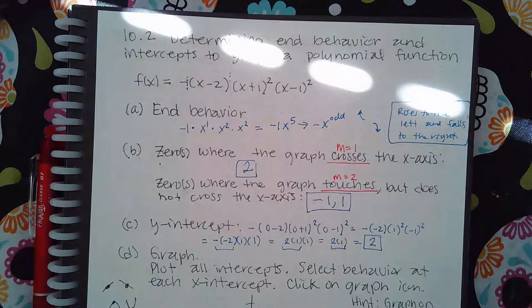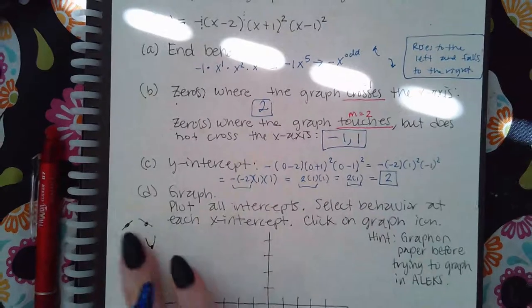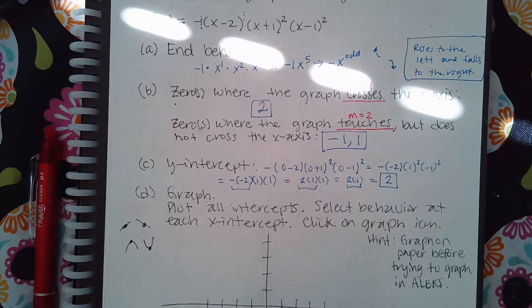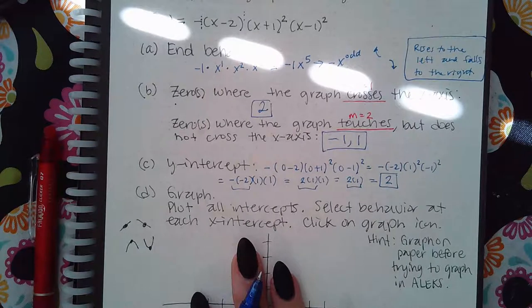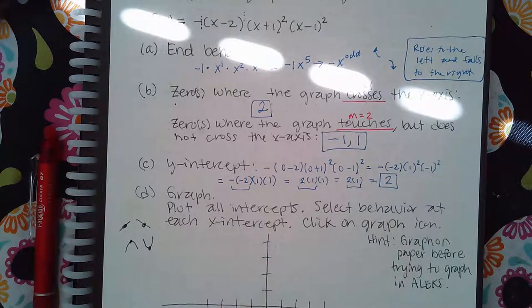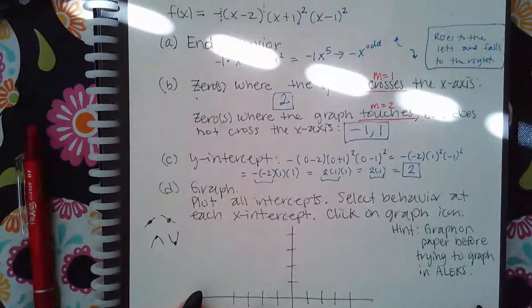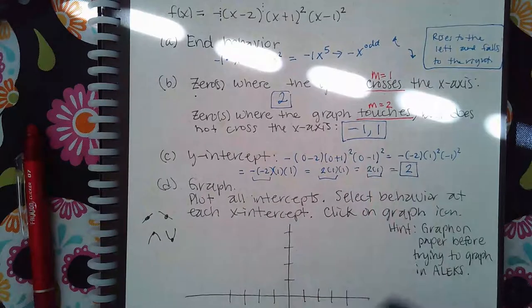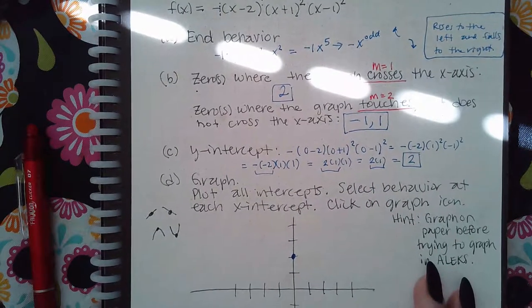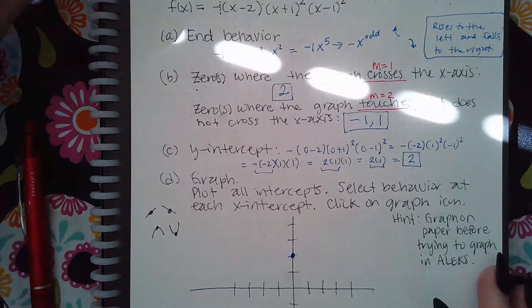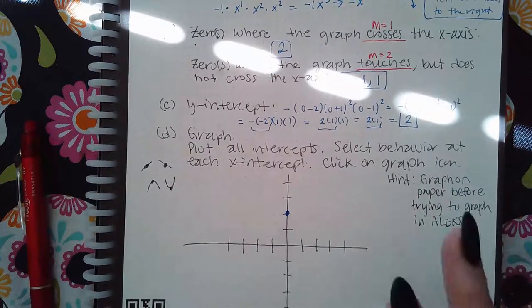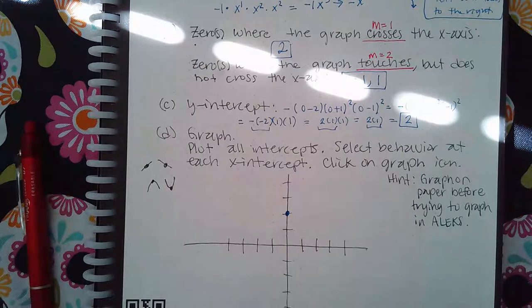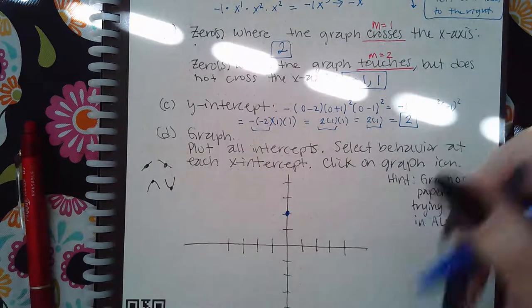The problem says to plot all intercepts, select the behavior at each x-intercept, and then click on the graph icon. You won't be able to select the end behavior until you already know what it's supposed to look like, so I highly suggest you graph it on paper before trying to pick these things in the computer.